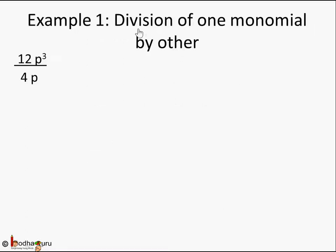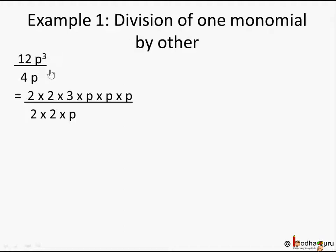Let's start with simple examples — division of one monomial by another monomial, meaning one term divided by one term. For example, divide 12p³ by 4p. The first step is to break the whole number into its prime factors: 12 is 2 × 2 × 3, and p³ is p × p × p. So the numerator 12p³ becomes 2 × 2 × 3 × p × p × p.